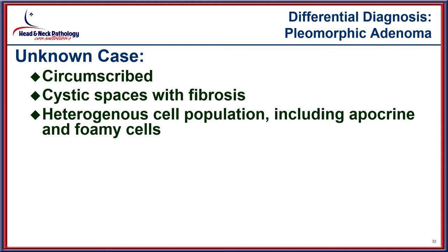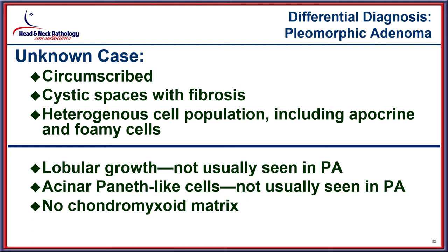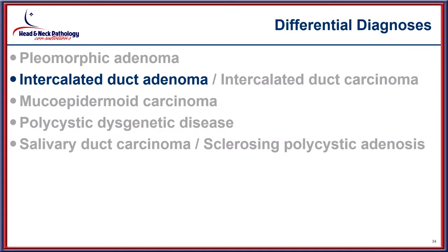Comparing our unknown case to pleomorphic adenoma: the unknown case has circumscribed cystic spaces and a heterogeneous cell population, but shows a more lobular growth not usually seen in pleomorphic adenoma. The acinar and Paneth-like cells are quite prominent, which are not seen in PA, and our case does not have any chondroid myxoid matrix material.